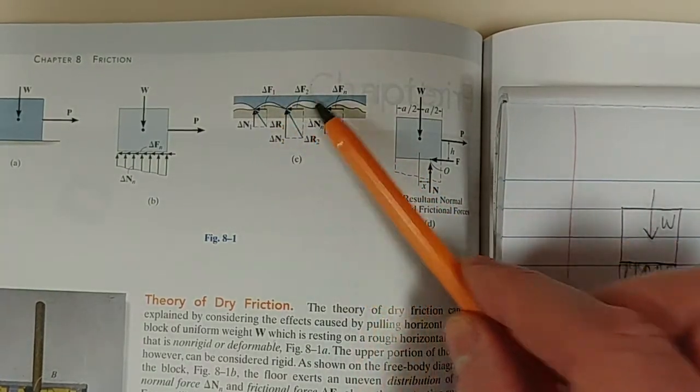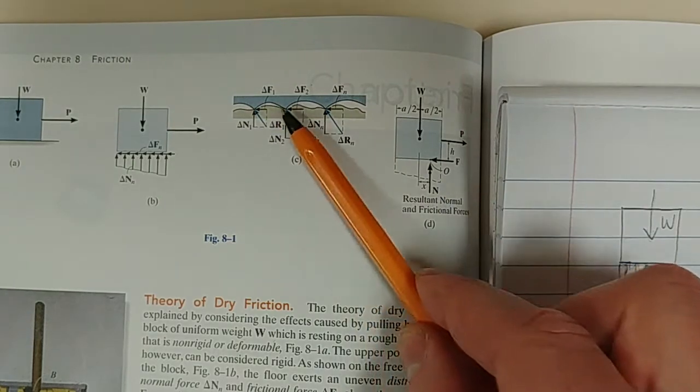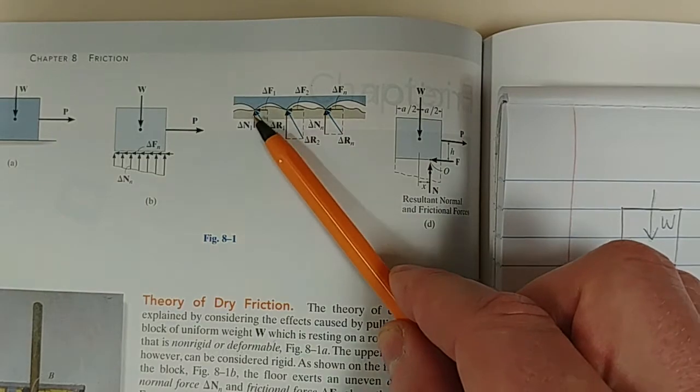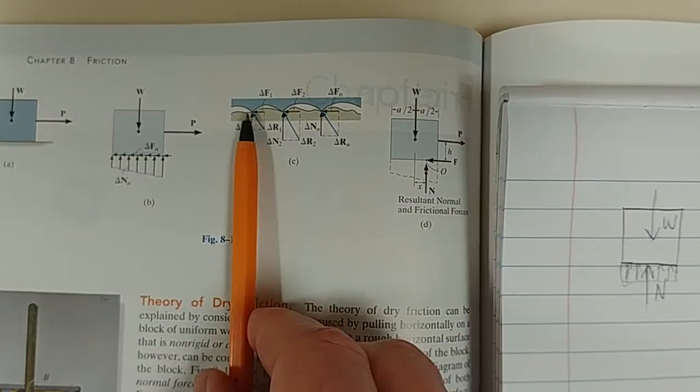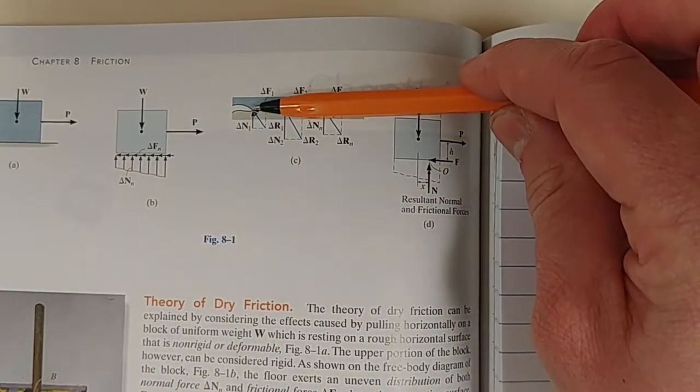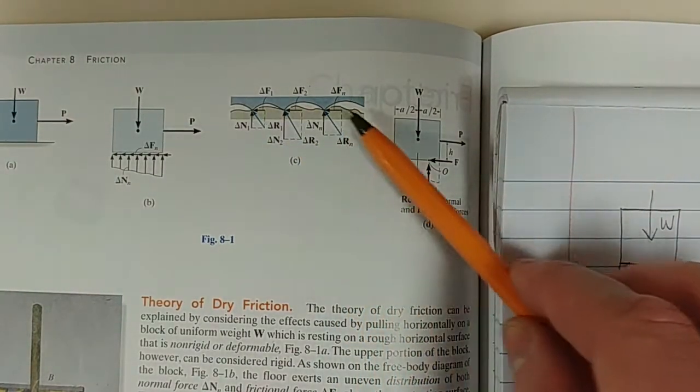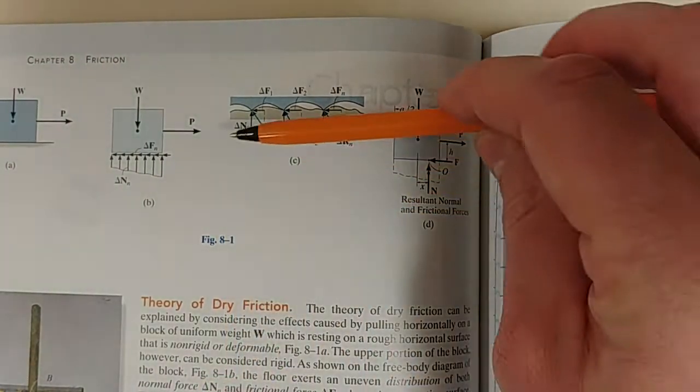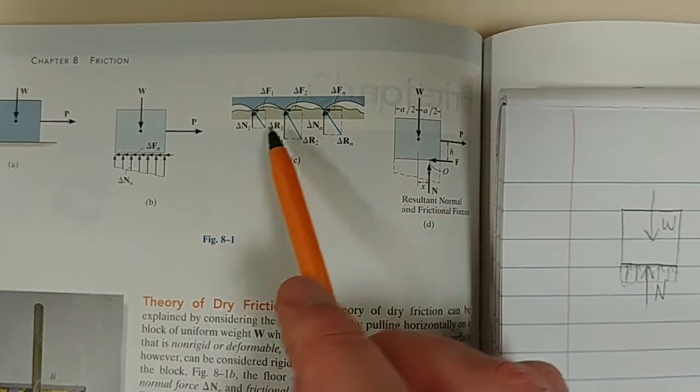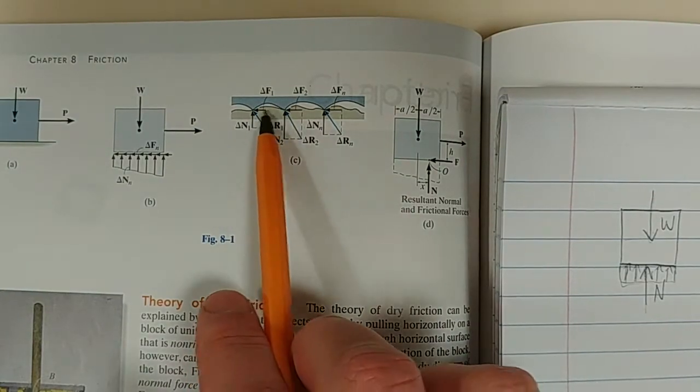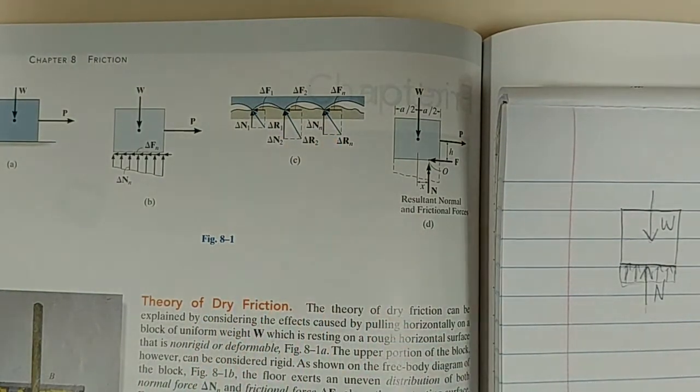And these reaction forces, you can see they're at an angle, and they're also a distributed load across the surface. This reaction force has a normal component and a horizontal component. So, you've got a bunch of these reaction forces, you've got a normal component, you've got a horizontal component. That normal component is the normal force, of course, and the horizontal component is then the frictional force.